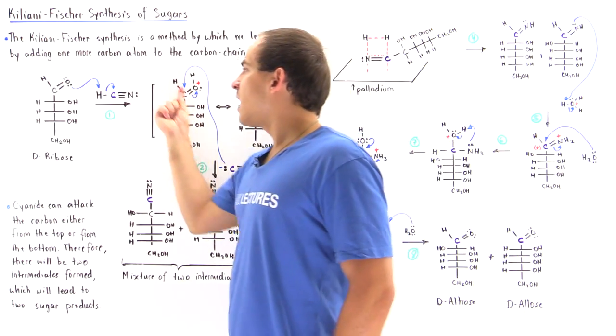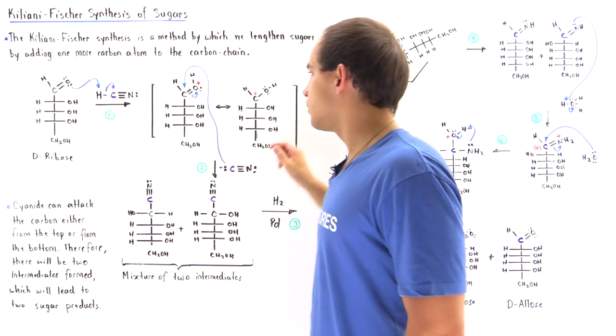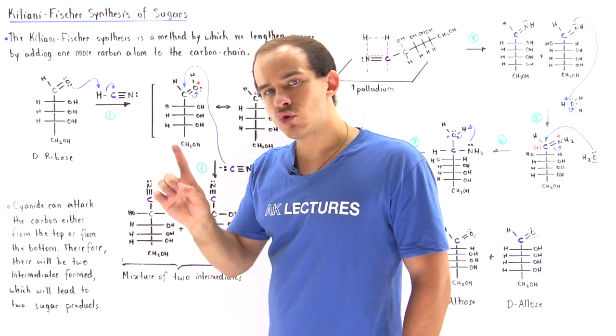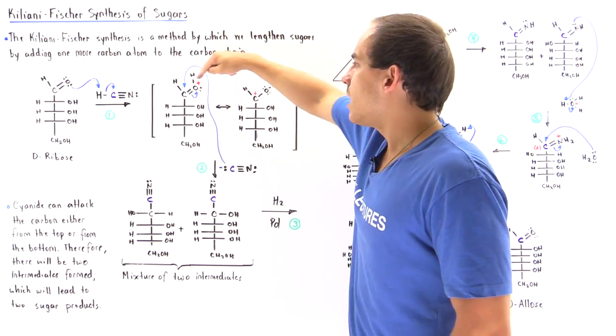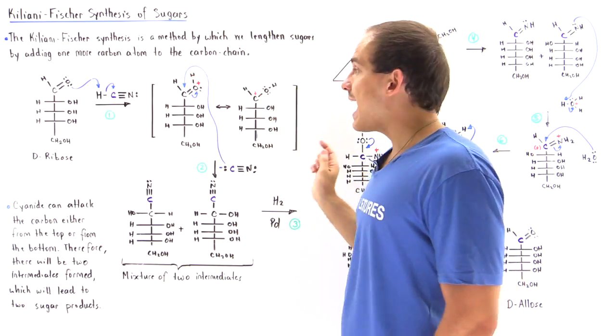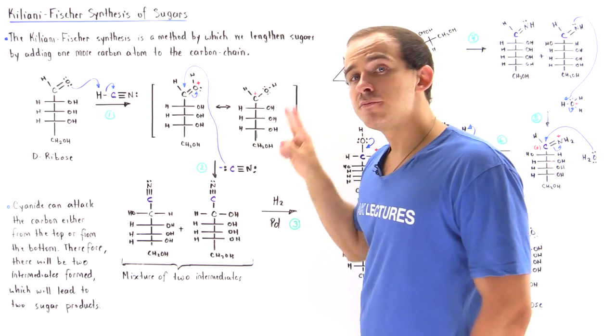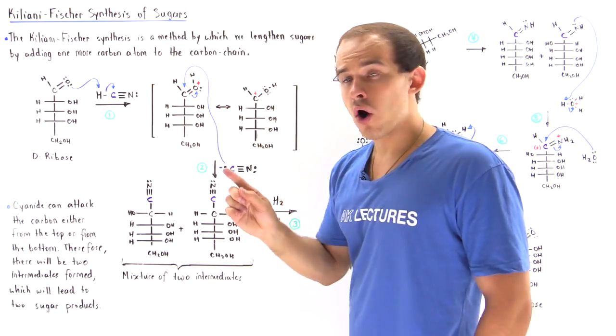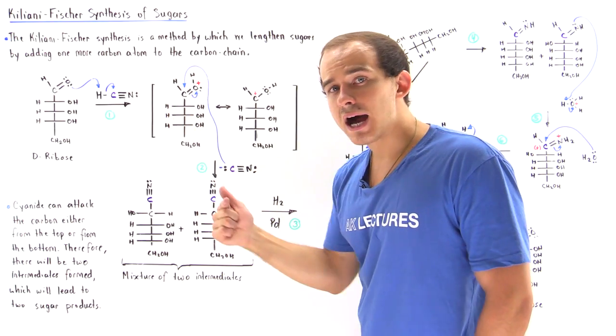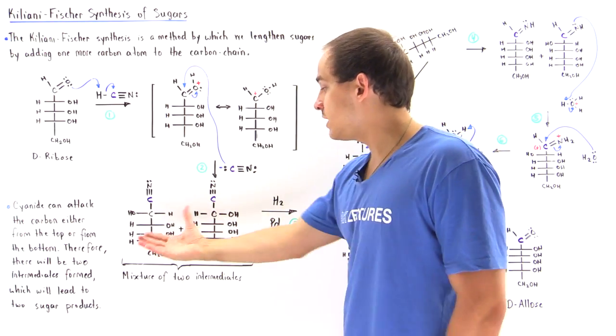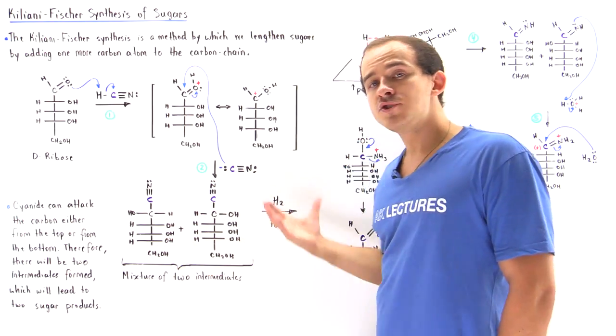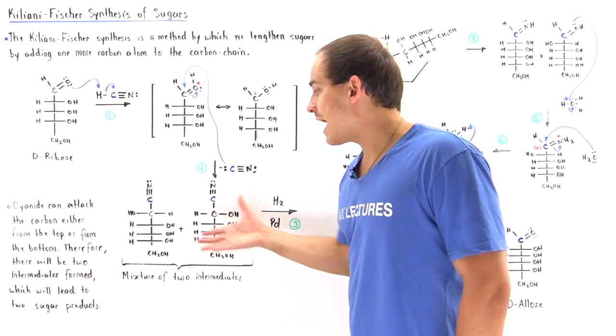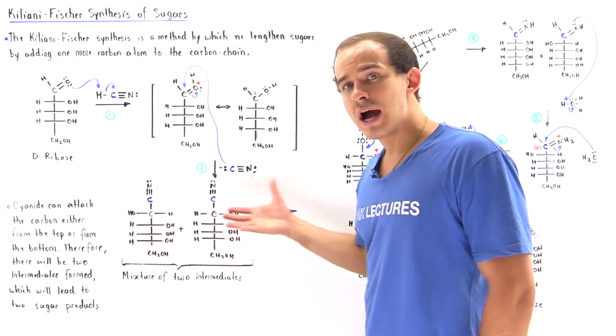In step two, the conjugate base of this molecule that is formed in step one, the cyanide, now can nucleophilically attack this carbon. It can add onto the carbon from two sides: from the top side or from the bottom side. We can form a mixture of two different stereoisomers.